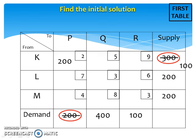Next, we need to move to the next square. We either move to the right or move down. Here, we can no longer move down because the demand value is already satisfied, so we move to the right.